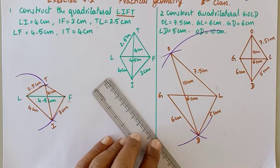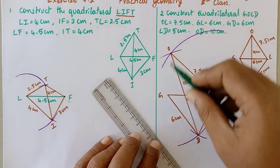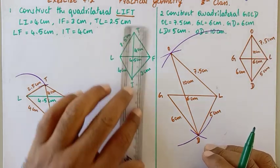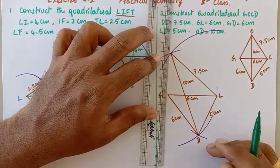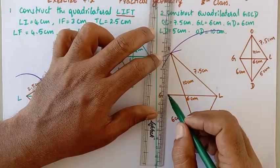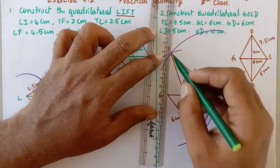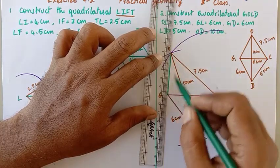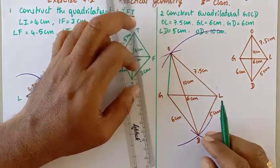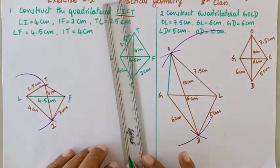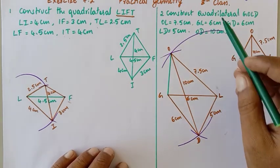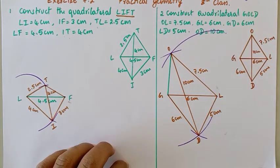Another side remaining is GO, but its measurement has not been provided. So I will simply join O and G by a line. This completes the construction of the quadrilateral GOLD.